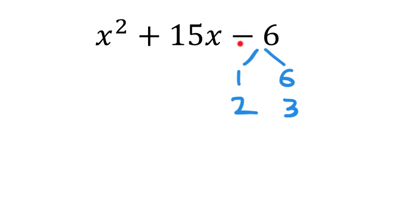Now, the problem here is it's a negative 6, so one of these has to be negative. If you make the 1 negative and then add those, you get positive 5 — it's not quite 15. And if you make the 6 negative, it makes it even further away, so it's not that.